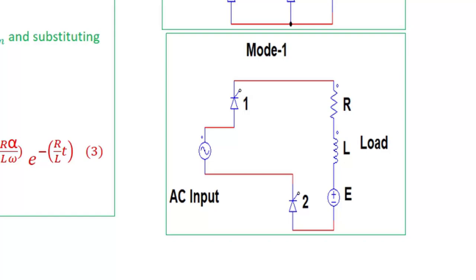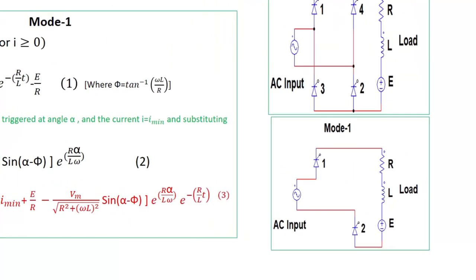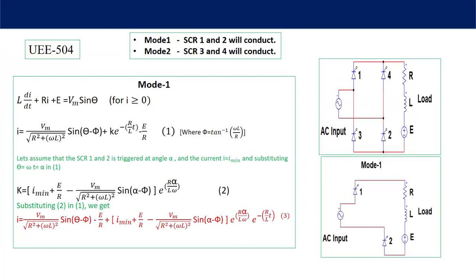Applying KVL in mode 1, we can write: L di/dt + Ri + E = Vm sin(θ), where i is the current. The current i is equal to Vm divided by the square root of (R² + ωL²) times sin(θ − φ). Here φ is the lagging angle, since the load is inductive the current will lag the supply voltage by angle φ, where φ = tan⁻¹(ωL/R). So i = Vm/Z × sin(θ − φ) + K·e^(−R/L × t) − E/R, where Z = √(R² + ωL²) is the impedance of the circuit.